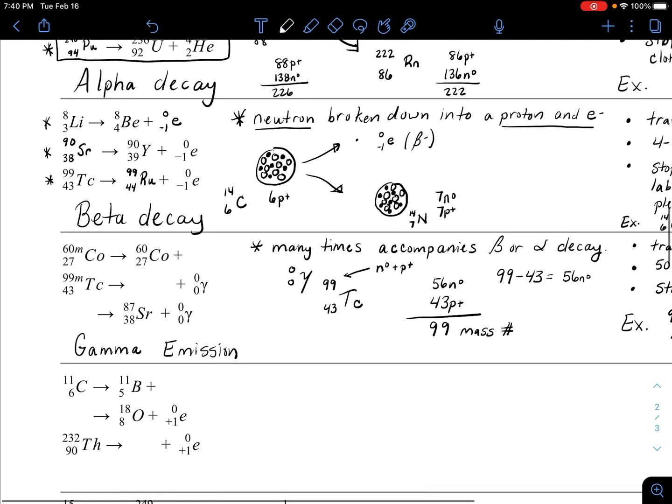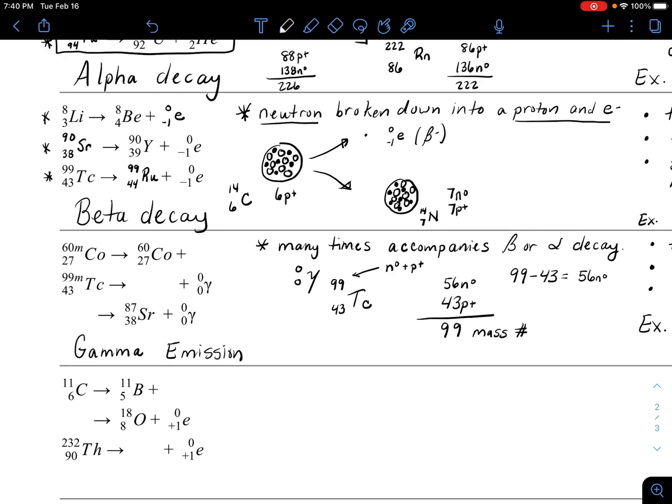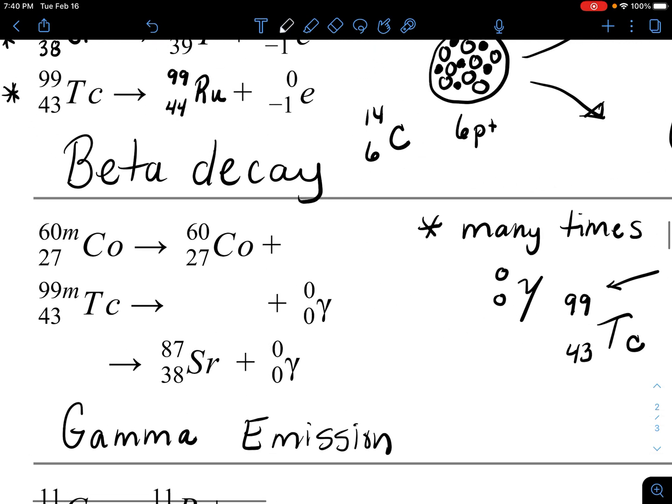So the good news is with gamma, if it's just gamma, it doesn't change the mass number or atomic number, so it's really easy to write these nuclear reactions because you just add in, okay well gamma was emitted. It went from being a metastable cobalt-60 to now just cobalt-60 with atomic number 27.